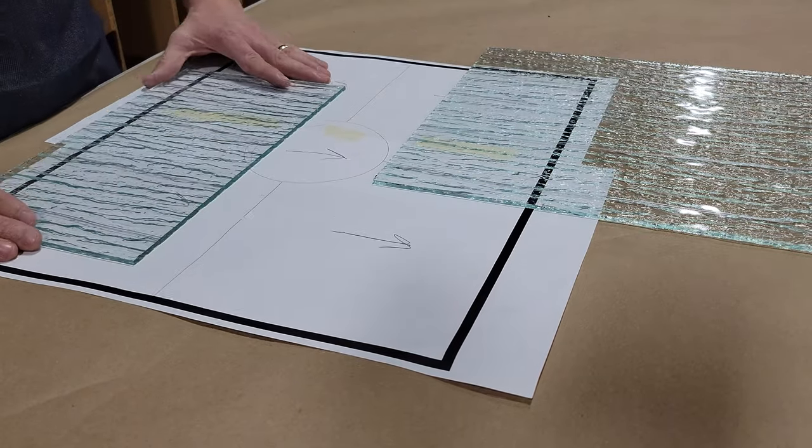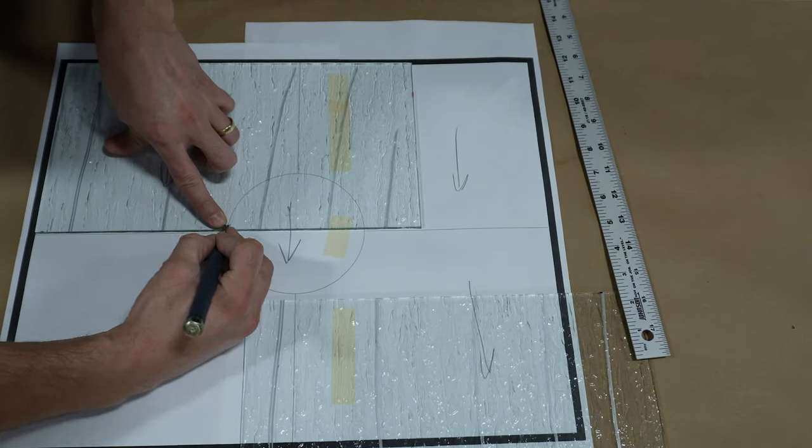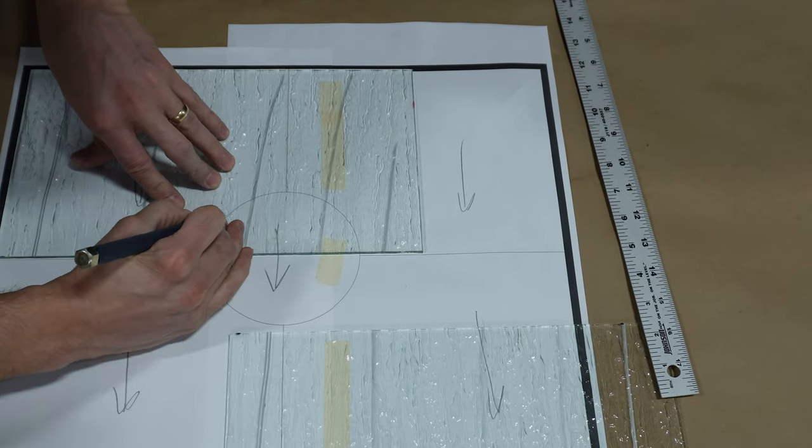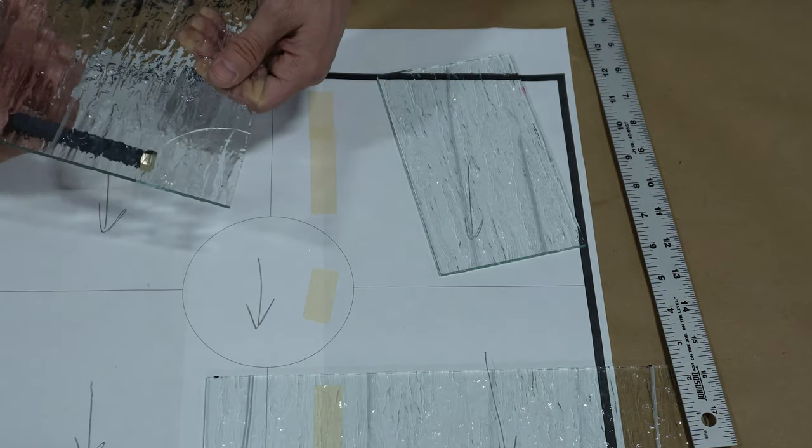With the first piece cut, I set it on the pattern and make sure it fits well. A little bit of careful freehand cutting around the arch of the circle, just inside of the line, and some taps with my glass cutter, and voila, the first piece is complete.